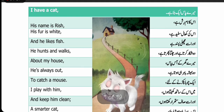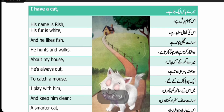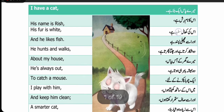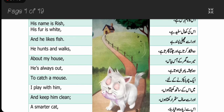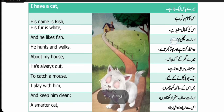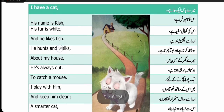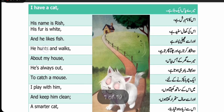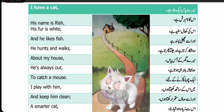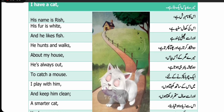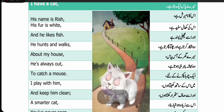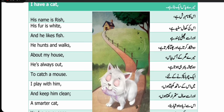'His fur is white.' Fur کہتے ہیں کھال کو — اس کی کھال سفید ہے۔ 'And he likes fish.' Like کہتے ہیں پسند کرنے کو — اور اسے مچھلی پسند ہے۔ 'He hunts and walks.' Hunt کہتے ہیں شکار کرنے کو، walk کا مطلب ہوتا ہے چلنا — وہ شکار کرتا ہے اور چلتا پھرتا ہے۔